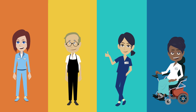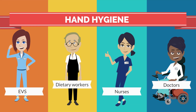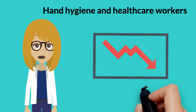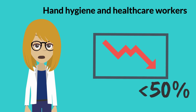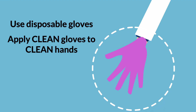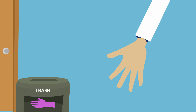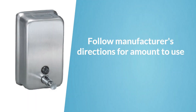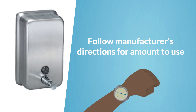Hand hygiene. An important part of preventing the spread of C. diff infections in healthcare depends on effective hand hygiene practices. Published studies have demonstrated that healthcare workers often follow proper hand hygiene practices less than 50% of the expected times. The most effective way to keep hands free from C. diff spores is to use disposable gloves. Apply clean gloves to clean hands before beginning tasks that may result in C. diff spore contamination. Upon completion and before exiting the room, remove the gloves at the doorway and perform hand hygiene. The amount of hand hygiene product used and the required time should be as directed by the manufacturer.